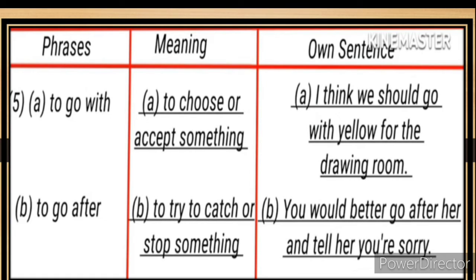Fifth pair: (a) 'To go with' — meaning: to choose or accept something. Sentence: I think we should go with yellow for the drawing room. (b) 'To go after' — meaning: to try to catch or stop something. Sentence: You had better go after her and tell her you are sorry.